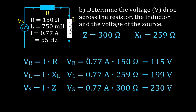I want to point out: this current doesn't specify whether it's RMS. If it's the RMS current, then these are RMS voltages. If it's the peak current, then these are peak voltages — don't get those mixed up. Also, according to Kirchhoff's laws, the sum of the voltage drops should equal the voltage gain. The source is 230 volts, but adding the two drops gives 314 volts. Remember, this is an AC source — all values are time-varying, so at any point in time the drops will equal the voltage gain.